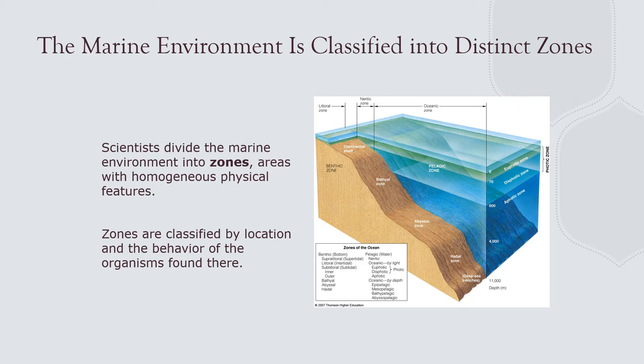Euphotic means there's enough light for photosynthesis; dysphotic means enough light for vision only; aphotic means no light. The oceanic zone is the area over the abyss or trench — basically over the deep ocean. Pelagic means in the water column over that deep area. The bathyal zone refers to the slope, the abyss means ocean floor, and hadal means deep-sea trenches.